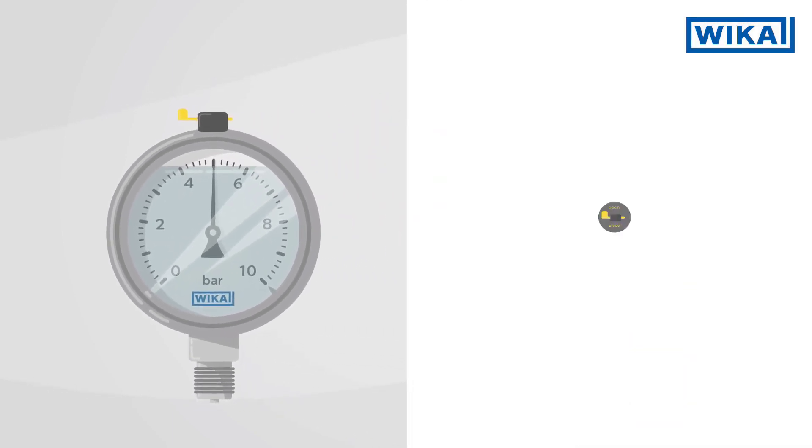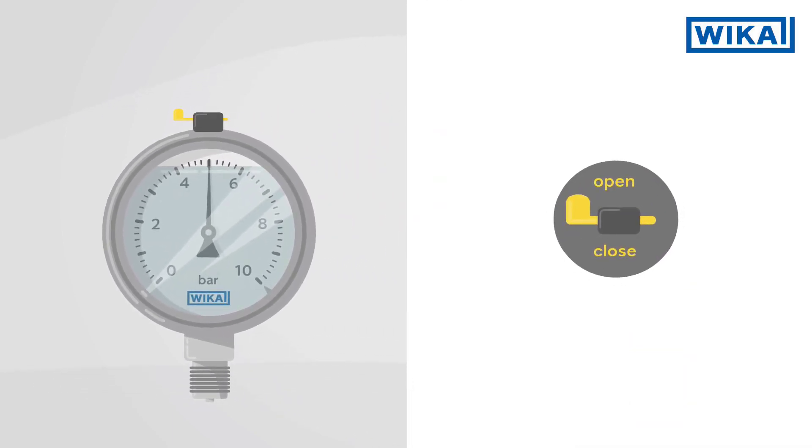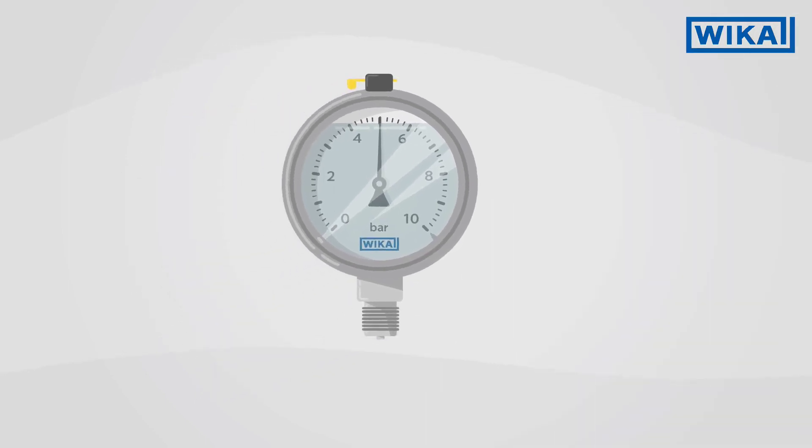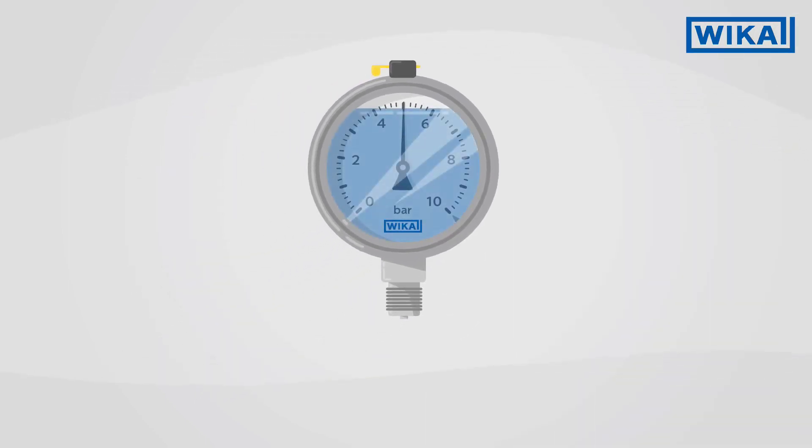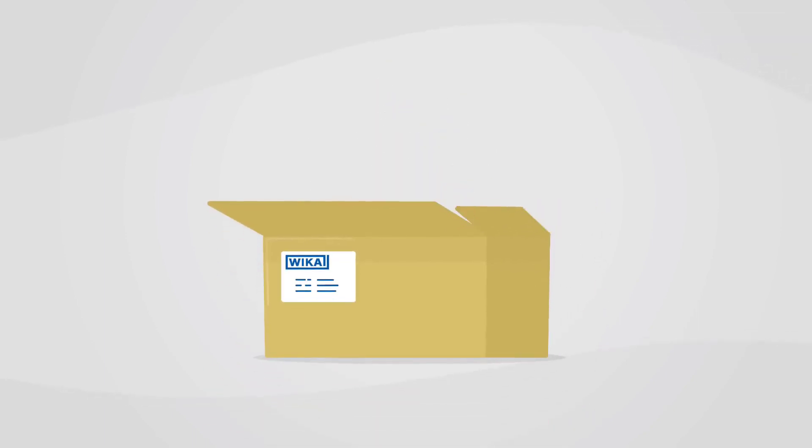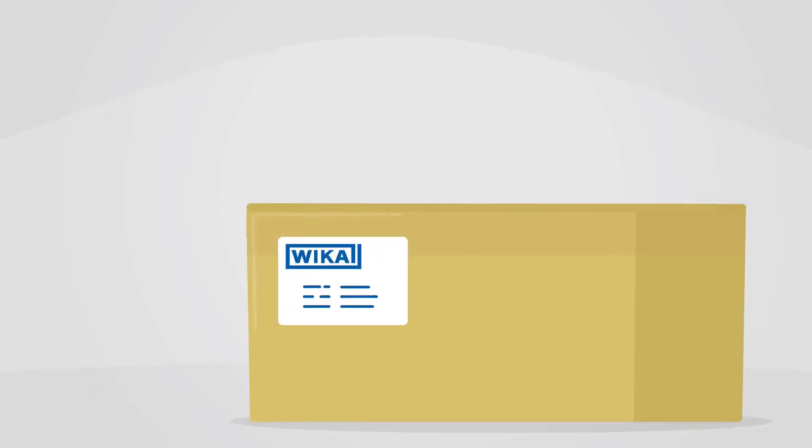If the pressure gauge is removed or transported, the yellow lever should be closed again. This applies in particular to filled pressure gauges.